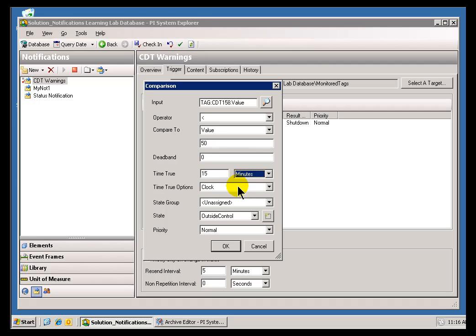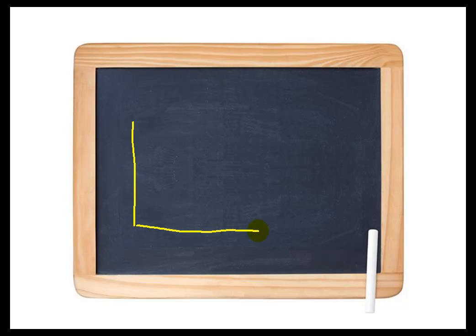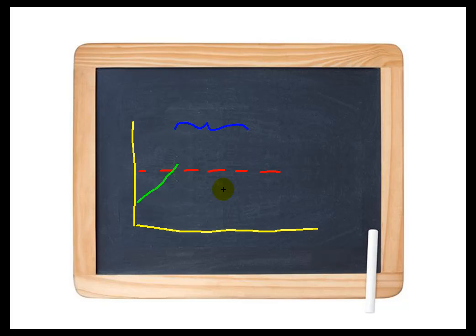For Time True, we have a couple of options that need to be explained in some detail. We have Clock versus Natural — the default is Clock. When we've set up Time True, we're essentially saying, here's our Timeline, and we've got a Tag with an Alarm Limit right about here. As our Values come in and the value increases, once it crosses this point, we want some interval of Time to go by before we actually send an Alarm.